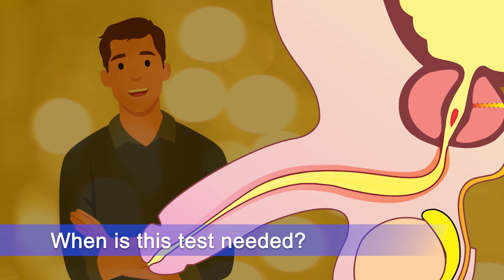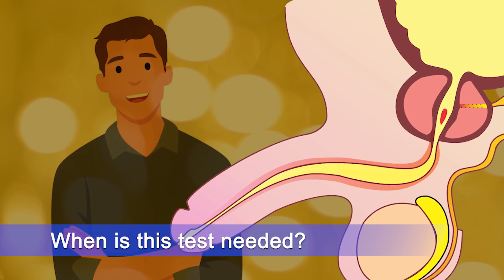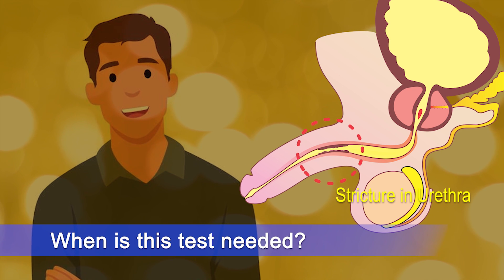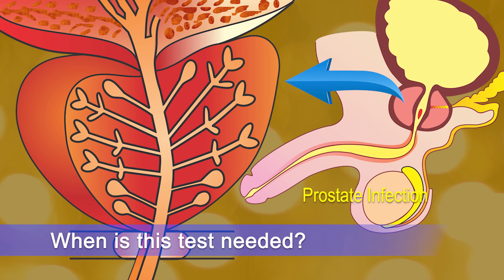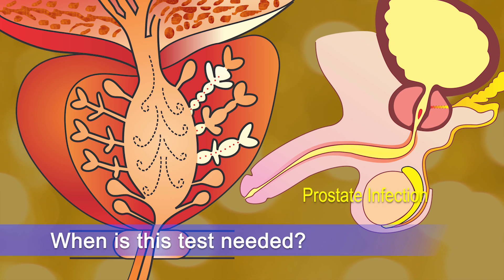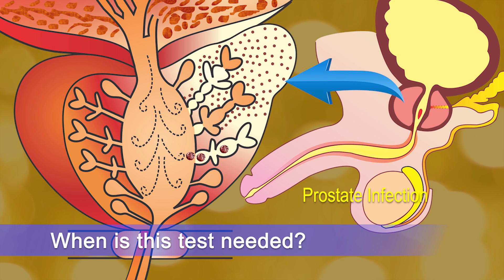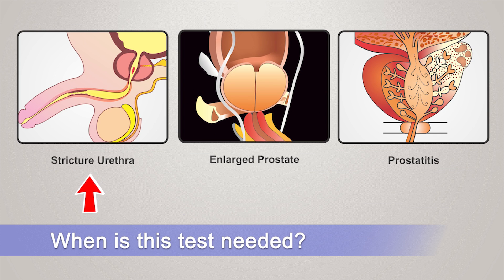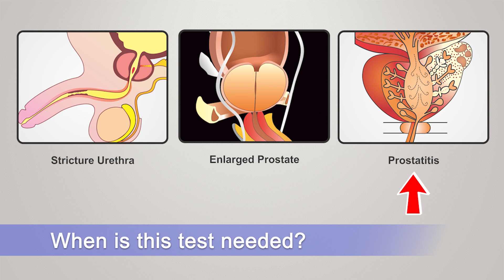In younger males, the more common disease is narrowing in the urethral passage, known as urethral stricture. Some younger males can also develop infection in their prostate gland, a condition known as chronic prostatitis. So either a blockade in the urethral passage known as stricture, enlargement of the prostate due to benign or malignant disease, or infection in the prostate — any of these diseases may require investigation by uroflowmetry.